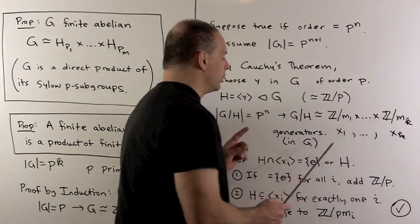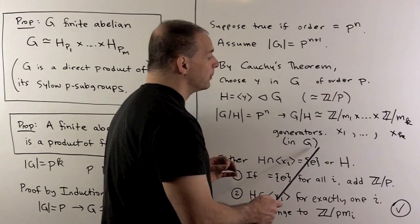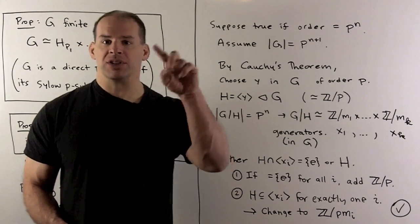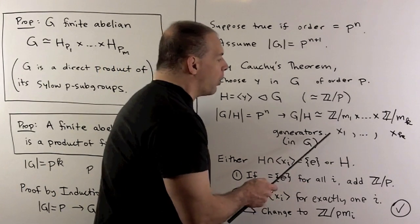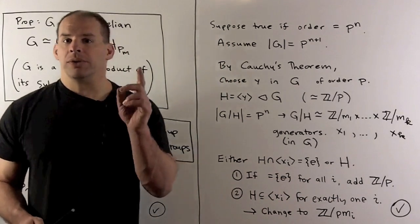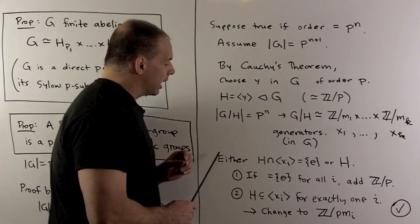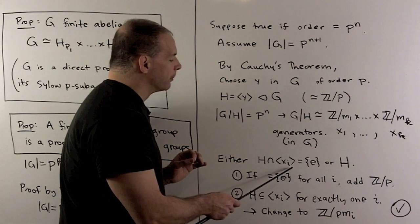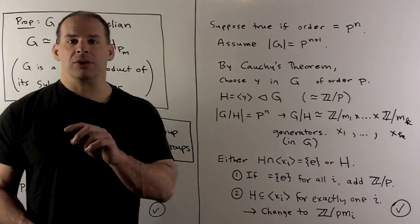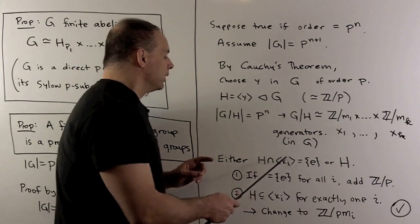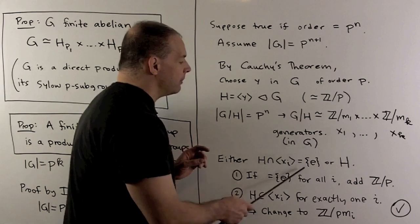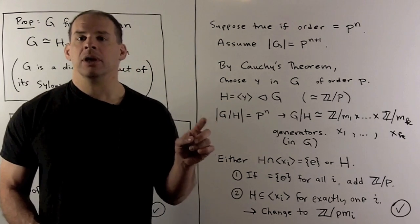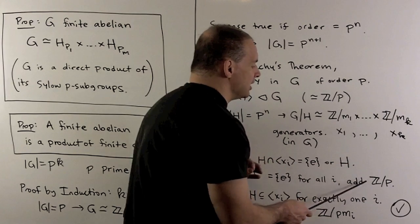For each cyclic factor, I'll pick an x sub i in the group G such that x sub i times H generates that cyclic factor — so we're picking an element of G, passing to cosets, and that generates a cyclic group. I want to consider the subgroup generated by all of these x sub i's. There are two things that can happen. First, consider what happens when we intersect H with one of these cyclic subgroups in G generated by x sub i. Because the order of H is prime, the intersection is either the identity element or all of H. If the intersections are always the identity element, we have the conditions for an internal direct product when we add in the subgroup generated by y. So in this direct product, we just add on a Z mod p and we have our result.